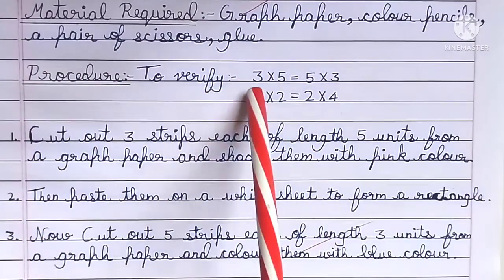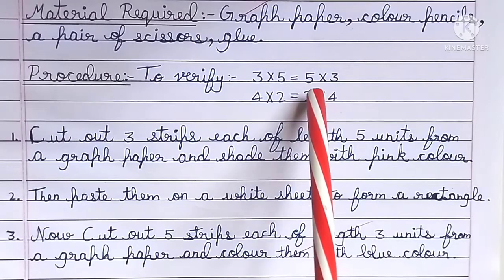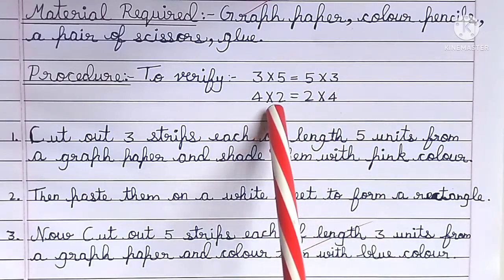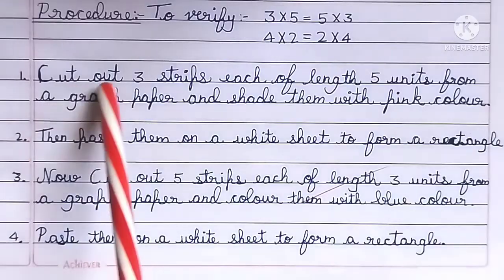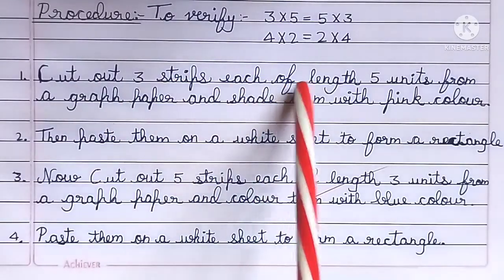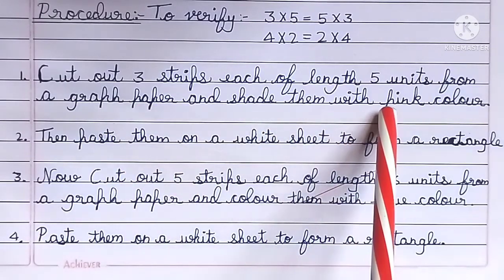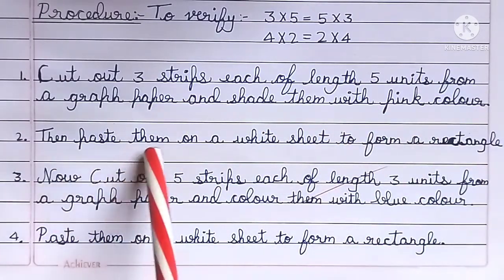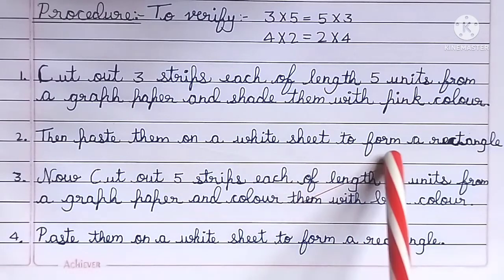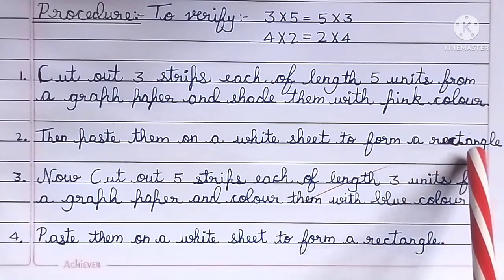Procedure to verify: 3 × 5 = 5 × 3, 4 × 2 = 2 × 4. Cut out 3 strips each of length 5 units from a graph paper and shade them with pink color. Then paste them on a white sheet to form a rectangle.